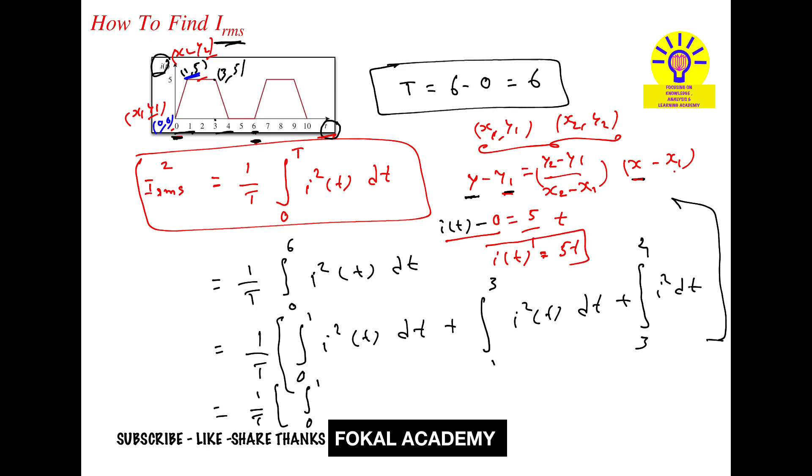In the limits from 0 to 1, this is the line equation, that is the current equation. It becomes 5 square t square, 5t whole square dt. Plus, in the limits from 1 to 3, it is a constant value 5. 5 square dt.